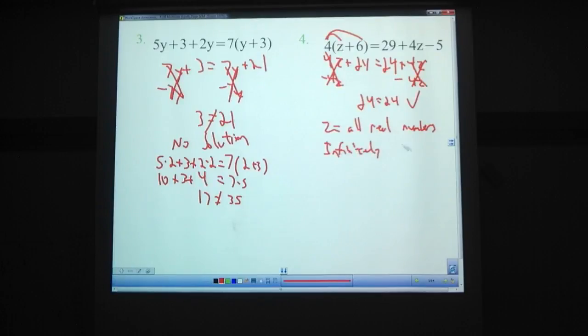So that means that z can equal anything. It can equal all real numbers. And there are a total of infinitely many solutions. Which, that's kind of the key thing on this quiz, is identifying infinitely many solutions, no solutions or one solution.